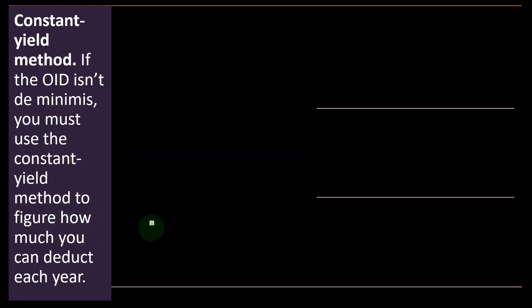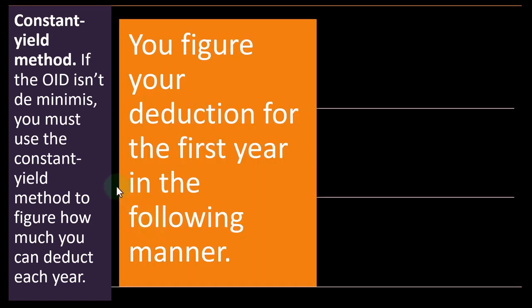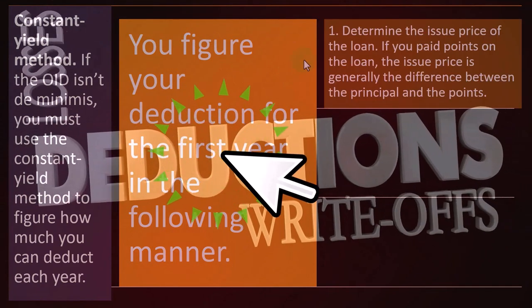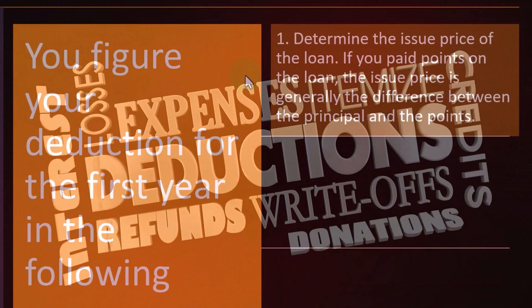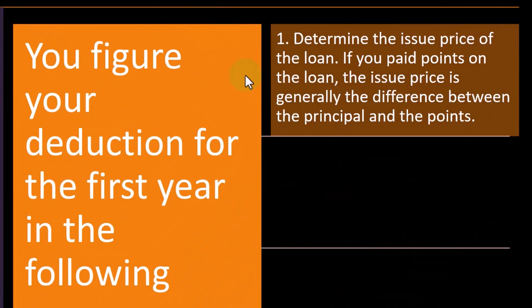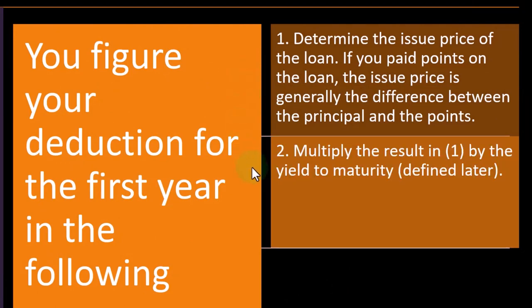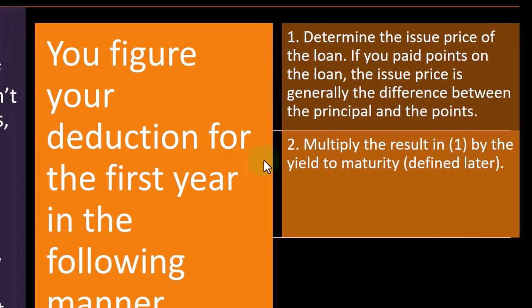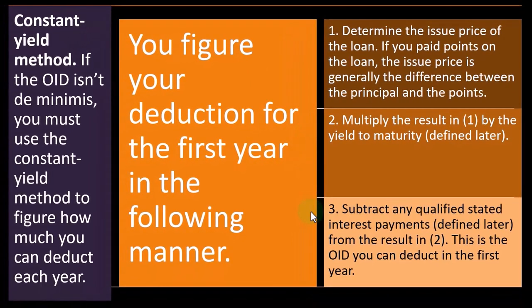Constant yield method: If the OID is not de minimis, you must use the constant yield method to figure how much you can deduct each year. To figure your deduction for the first year: (1) Determine the issue price of the loan — if you paid points, the issue price is generally the principal minus the points. (2) Multiply that result by the yield to maturity. (3) Subtract any qualified stated interest payments from the result in step two. This is the OID you can deduct in the first year.